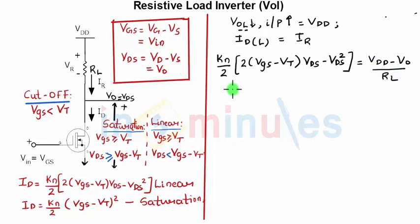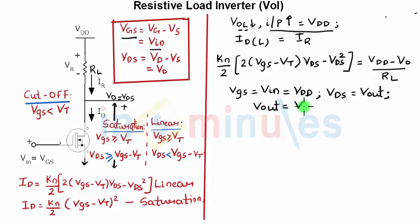Now if you look properly you will know that VGS is nothing but equal to VIN which is nothing but equal to VDD. We also know that VDS is equal to VOUT and because we are trying to find out VOL we know that VOUT is nothing but equal to VOL because output is what we are finding.